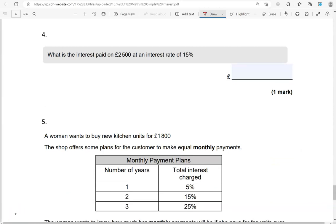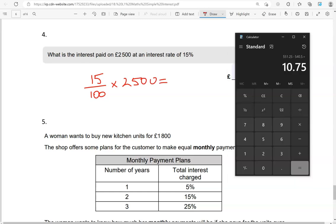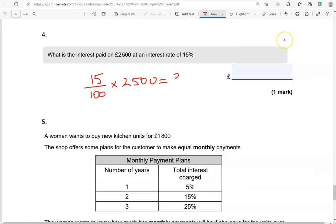What is the interest rate on 2,500 pounds at an interest rate of 15%? That is 15%. So, 15 divided by 100 times 2,500 gives us 375 pounds. So, that is 375 pounds.